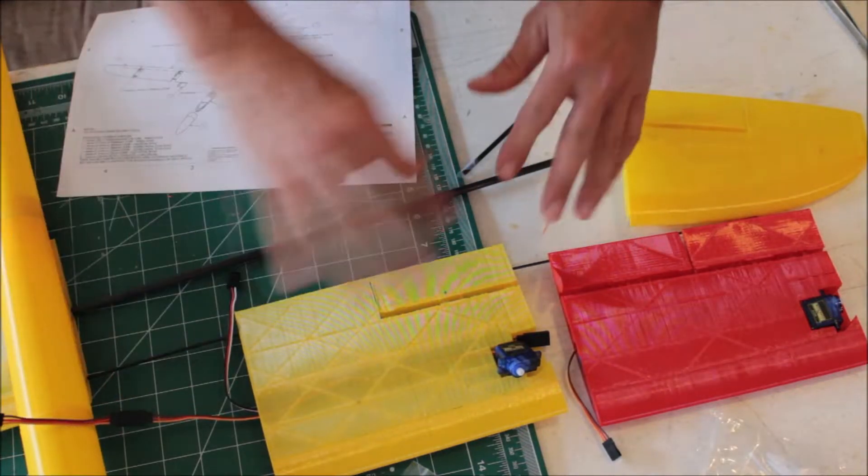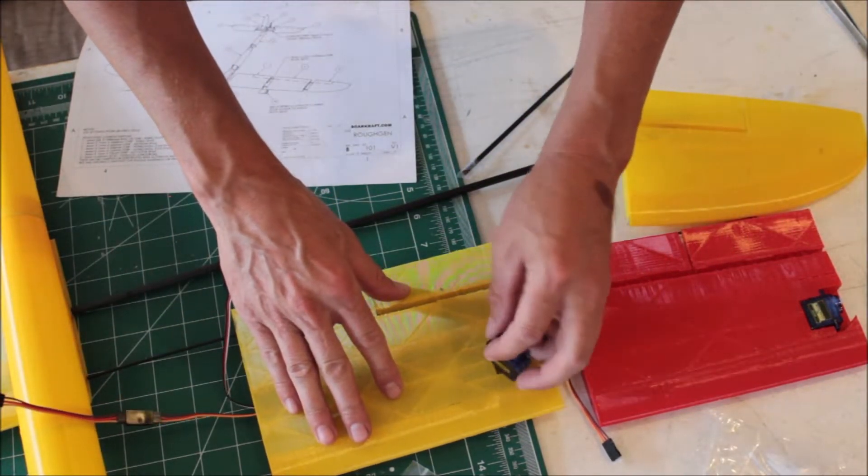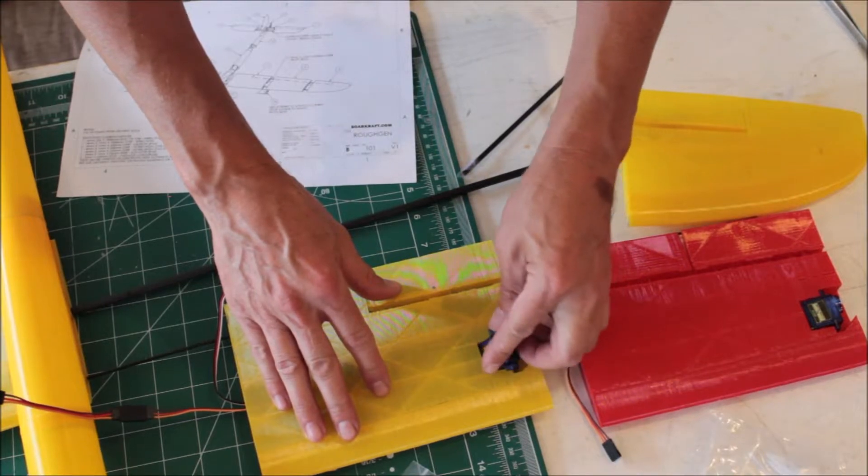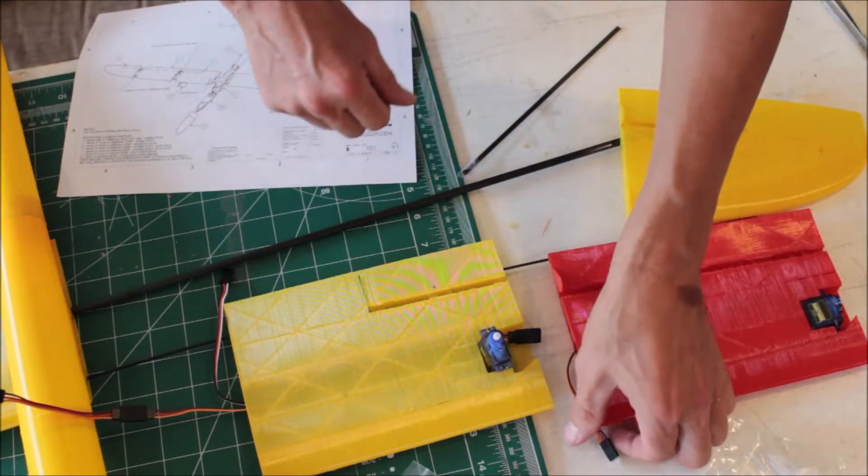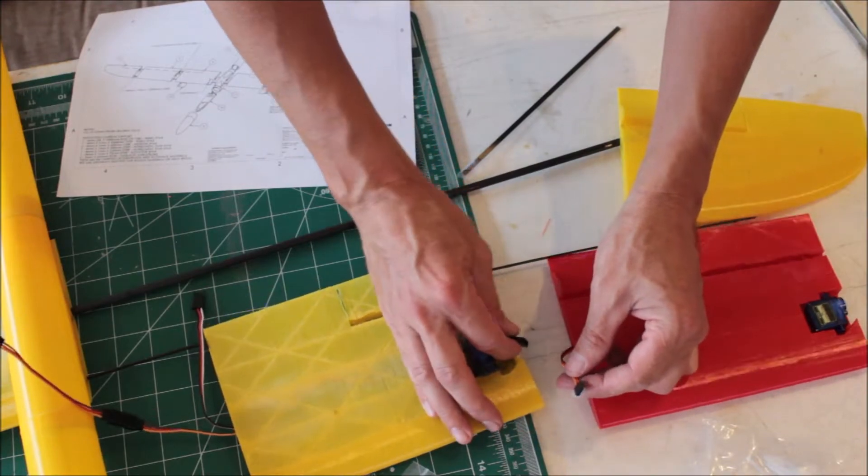And now you can mark them left and right, so that when they're all in the fuselage, it's easy to understand which one is which.